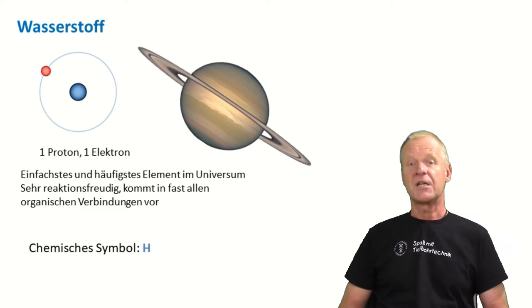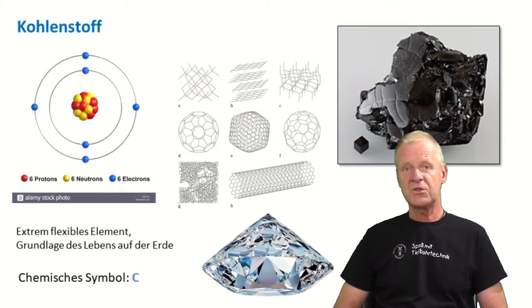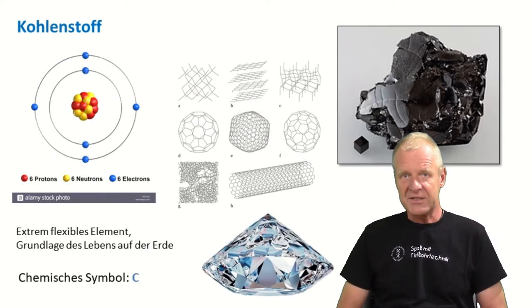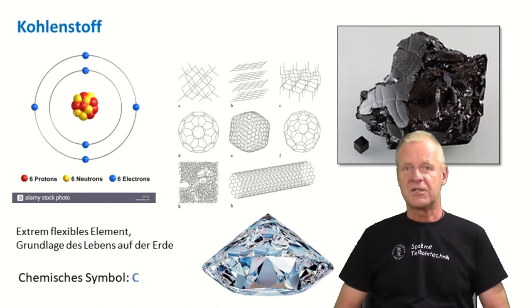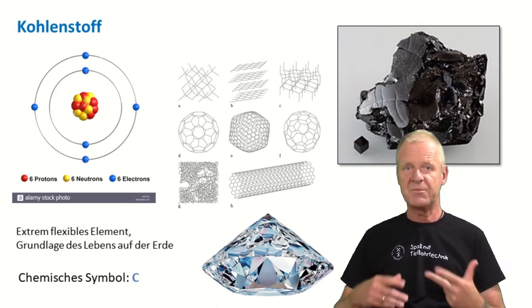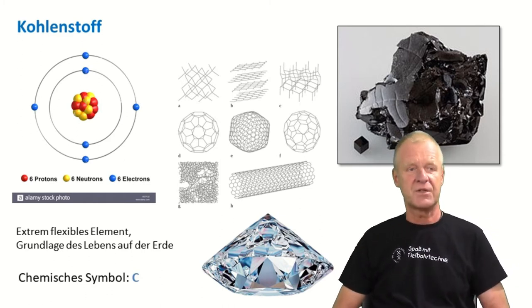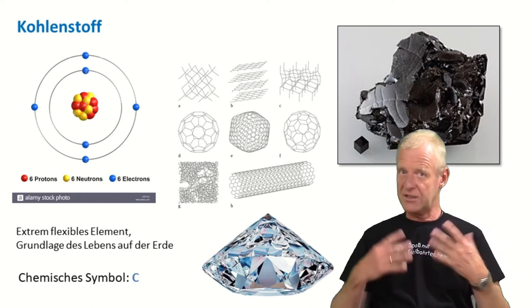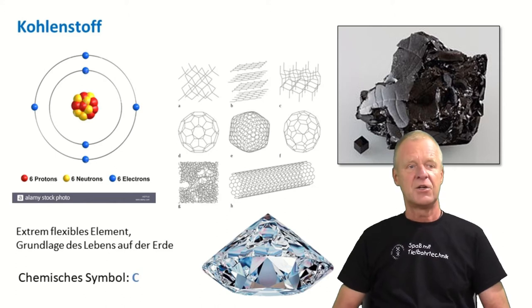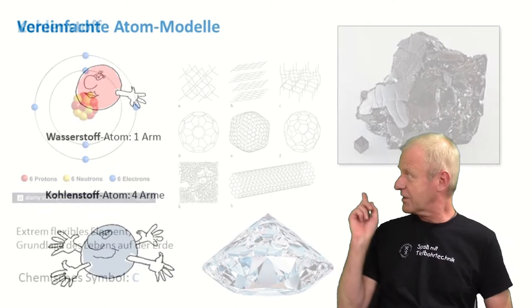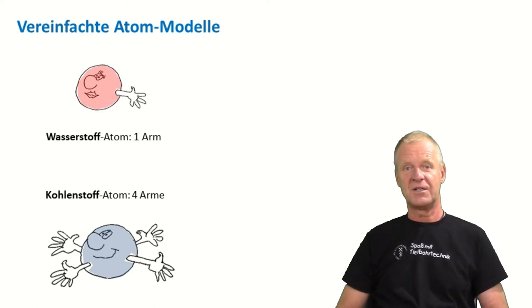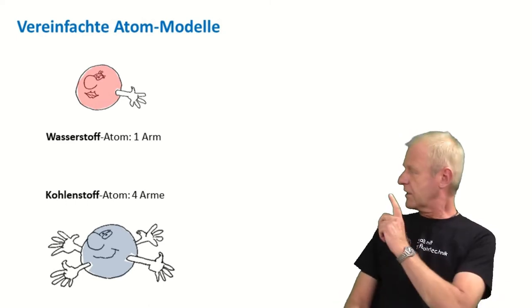The next element we'll look at is carbon. Carbon atoms are much more complex than hydrogen and carbon is also very common in nature. Carbon atoms are very flexible while combining with each other so they can generate different structures such as graphite, even diamond for example. But these details are not so interesting here. We would like to keep everything as simple as possible. So let's imagine that atoms are little balls with arms. In our mind, hydrogen has just one arm and the carbon has four arms.